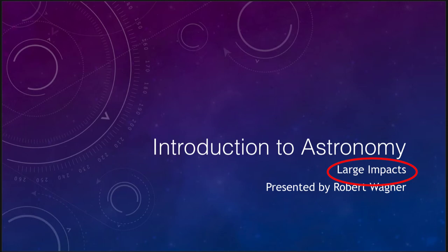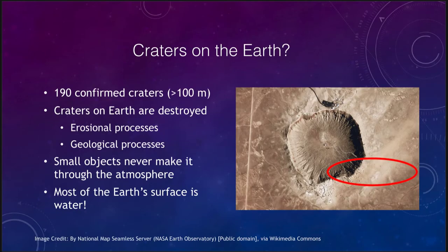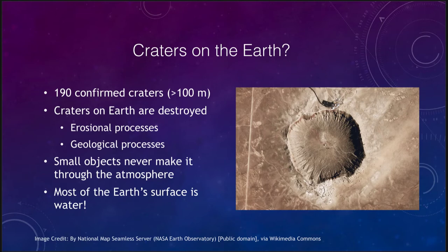We see craters on the moon. What do we see on the Earth that tells us that the Earth has been impacted just as much as the moon? There are 190 confirmed craters that are at least 100 meters in size — about the size of a football field. So there are nearly 200 craters at least that size.